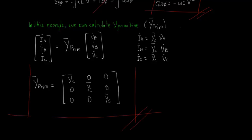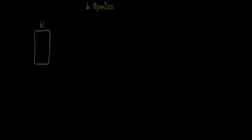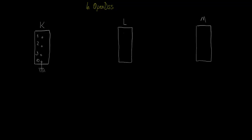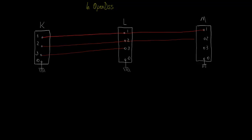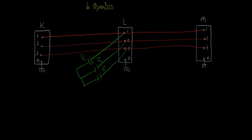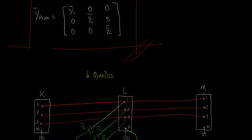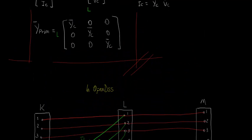Now, how can we define this element in OpenDSS? Let's assume that we want to connect our capacitor bank in a medium-voltage distribution line. In OpenDSS, we can model it as two three-phase lines connected between three buses, K, L, and M. The branches of the capacitor bank will then be connected to nodes 1, 2, and 3 of bus L, and its center node connected to node 0, which is always grounded. The Y-primitive matrix node's order is then 1, 2, and 3.